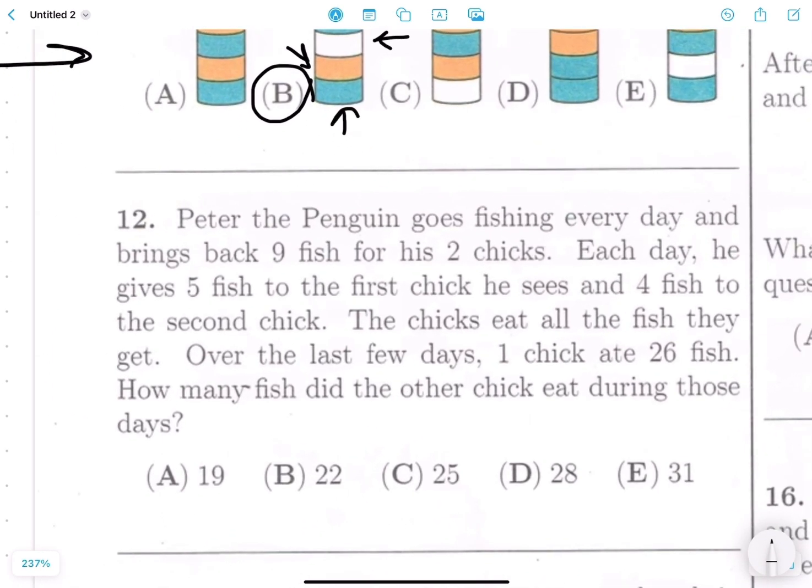Peter the penguin goes fishing every day and brings back nine fish for his two chicks. Each day he gives five fish to the first chick he sees and four fish to the second chick. The chicks eat all the fish they get. Over the last few days, one chick ate 26 fish. How many fish did the other chick eat during those days? Okay, so basically, first of all, let's highlight important details.